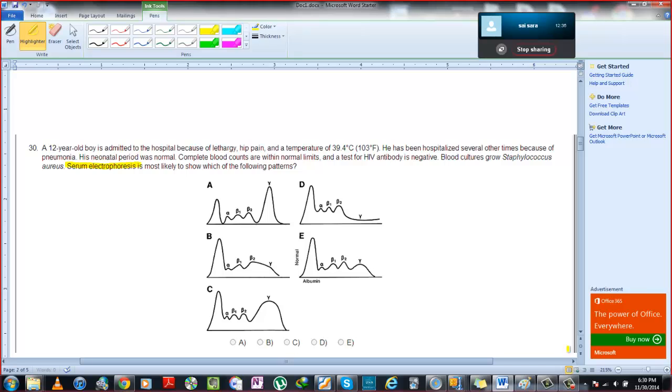Okay, so we can see that they've given us some sort of serum electrophoresis. It's a 12-year-old boy admitted to the hospital because of lethargy, hip pain, and a temperature. He has fever, and he has been hospitalized several other times because of pneumonia. We're gonna stop over here and you're gonna tell me what is the differential diagnosis that's coming to your mind right now.